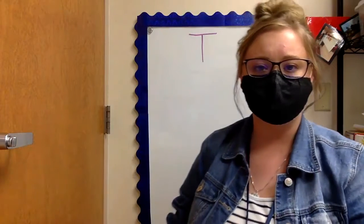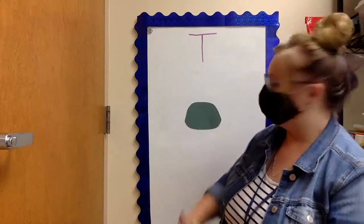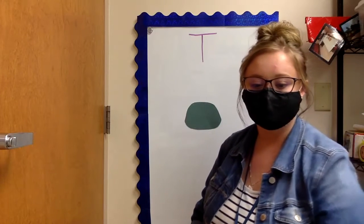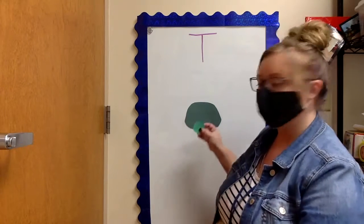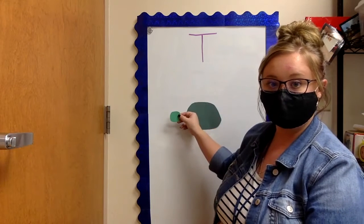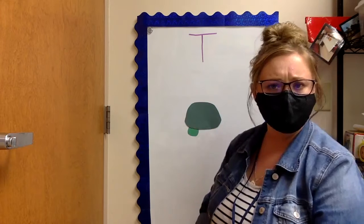So you're going to take your shell and you're going to put it in the middle of your paper. Yeah. And then you're going to take one of your green circles and you're going to put it not on the top, not beside, on the bottom.